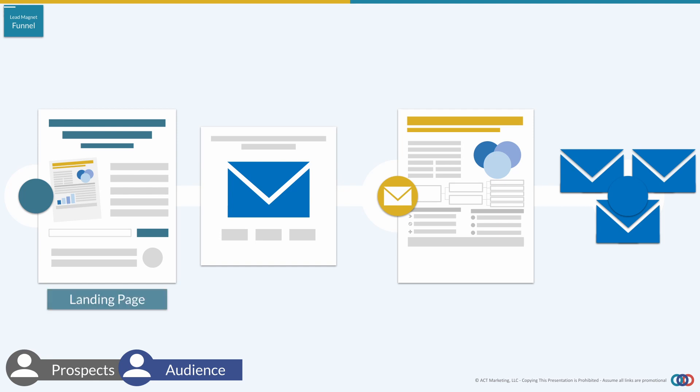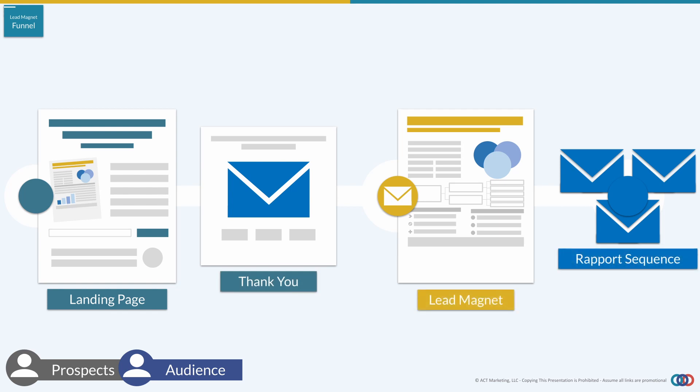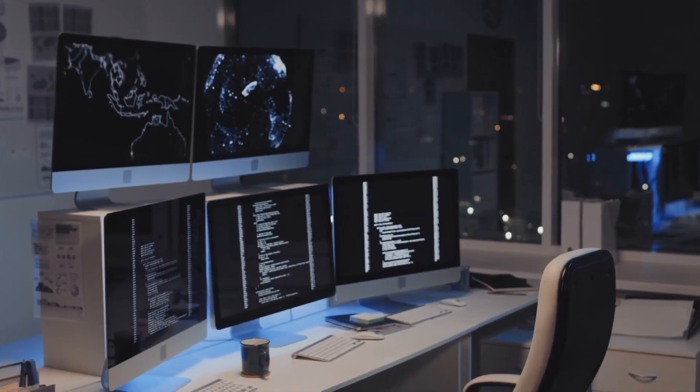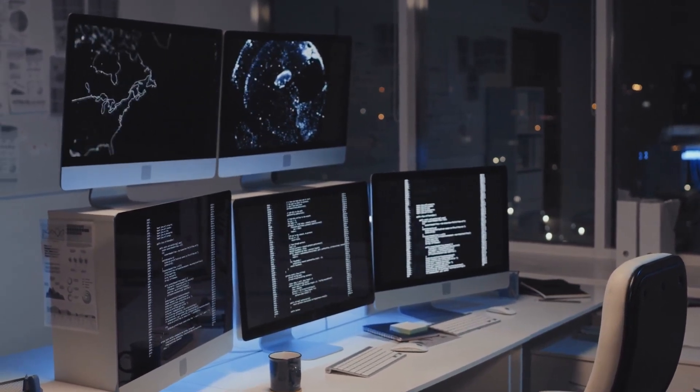First we have our landing page — this is where we say, 'hey, we have this awesome lead magnet, give us your email and we'll ship it off to you immediately.' It's important that you actually give it to them right after they opt in. Then an email goes out, they get their lead magnet, and we follow up with three to five emails offering whatever the next step of our sales process is — normally a low-ticket offer or jumping on a call for coaching, consulting, or services. This completely automates your list growth without any personal contact with each individual person.